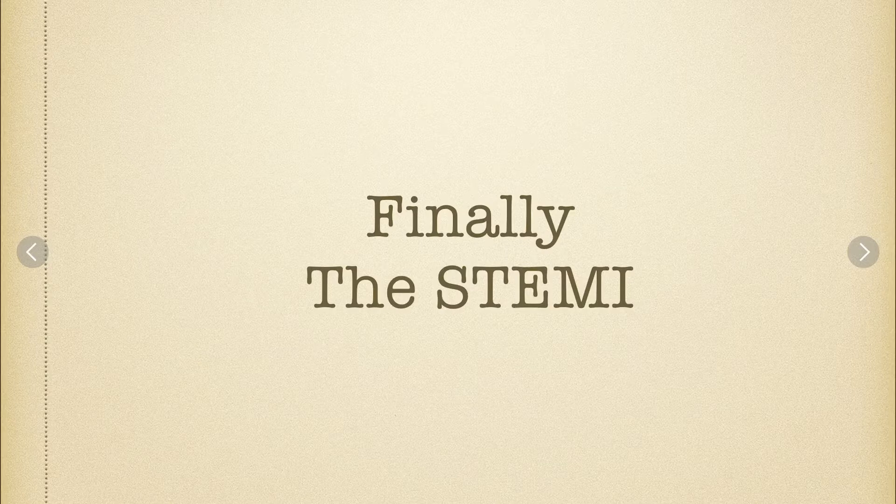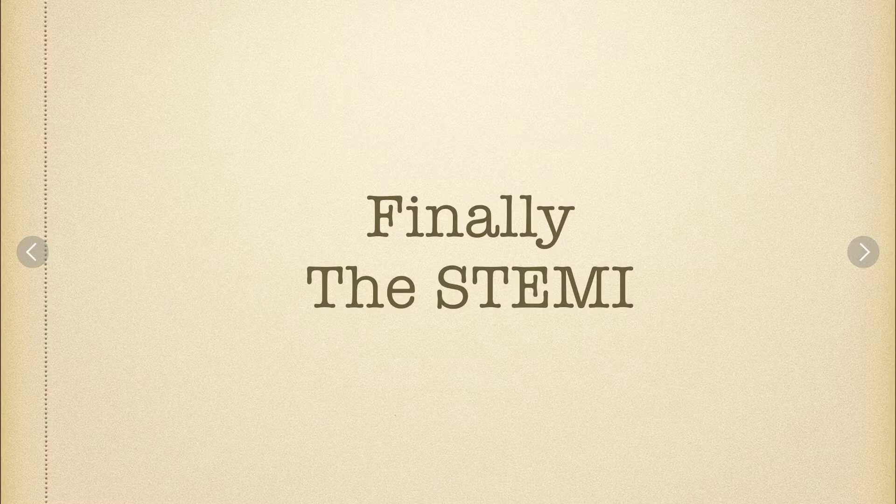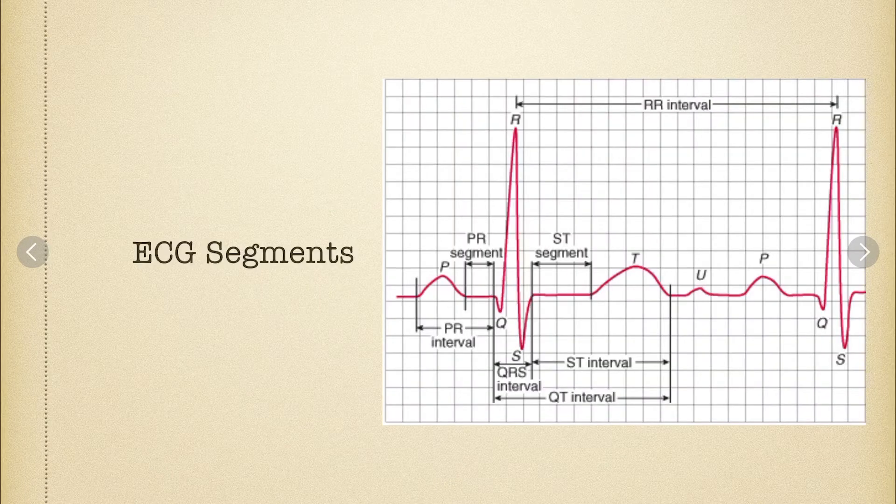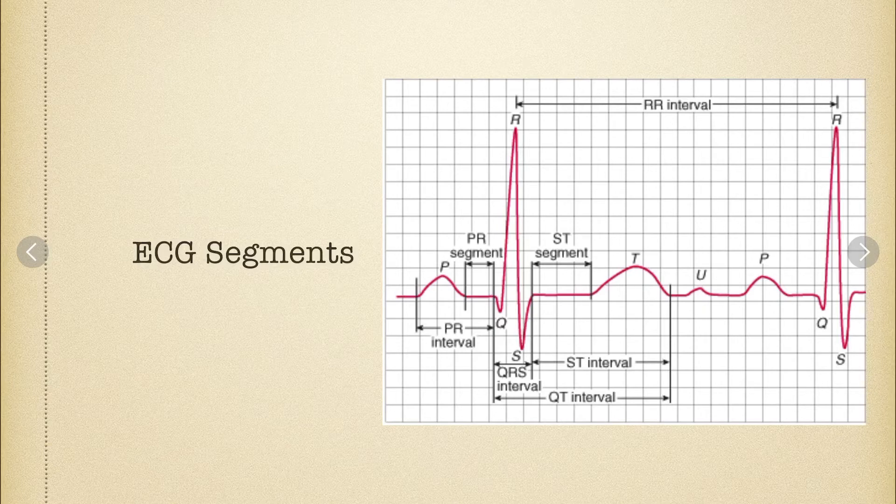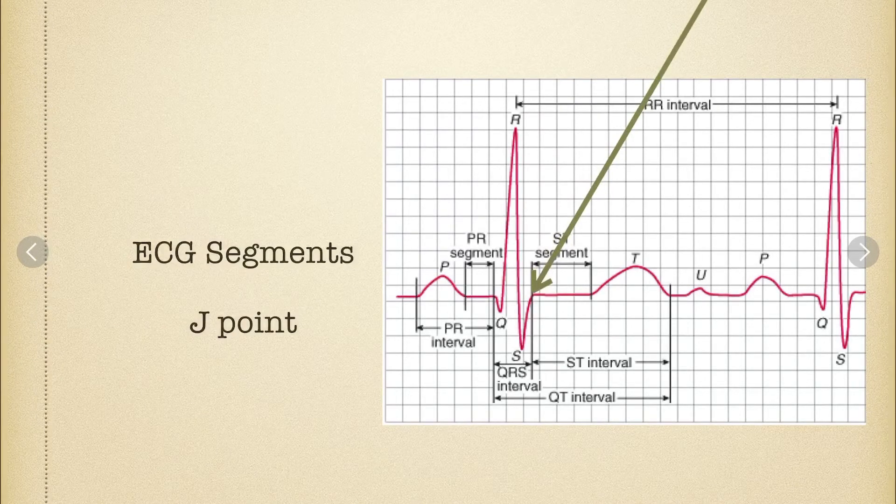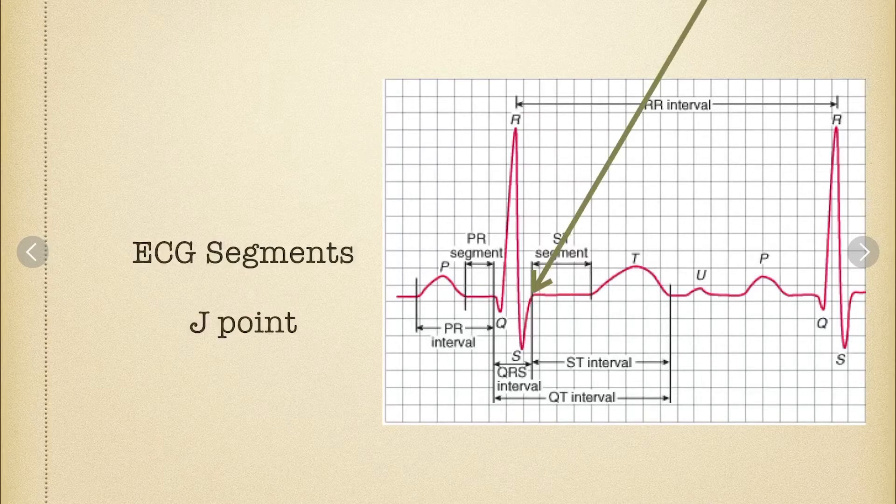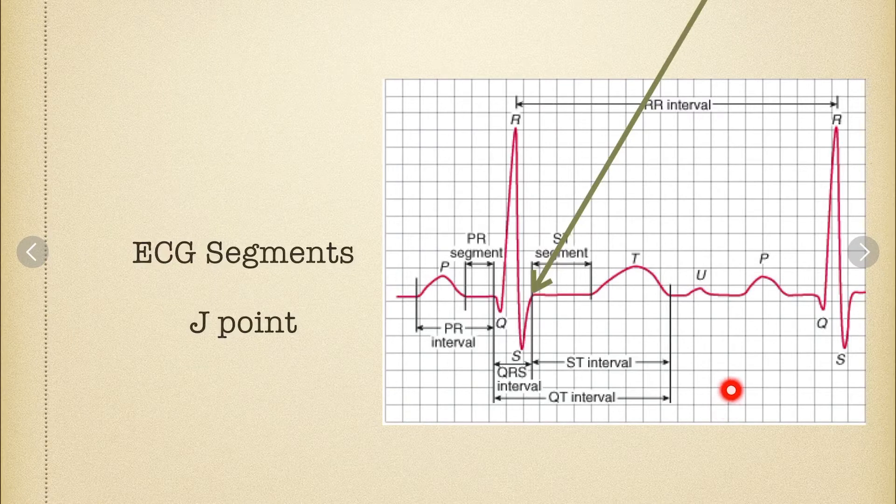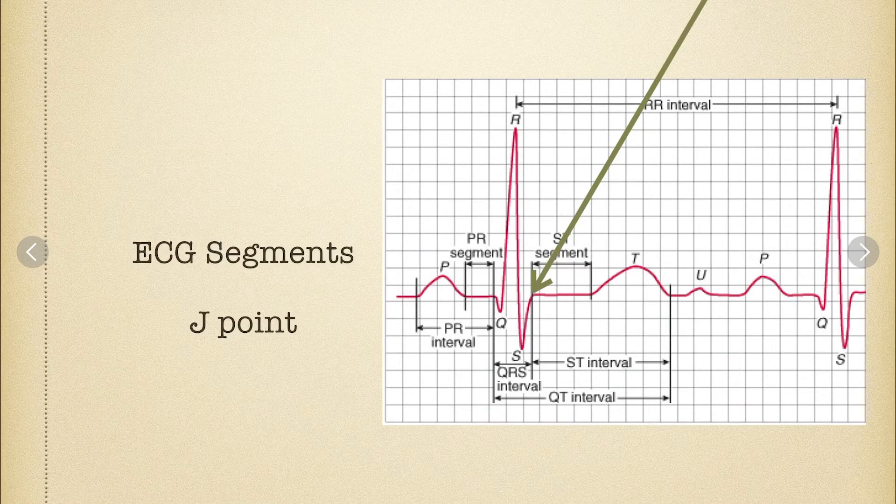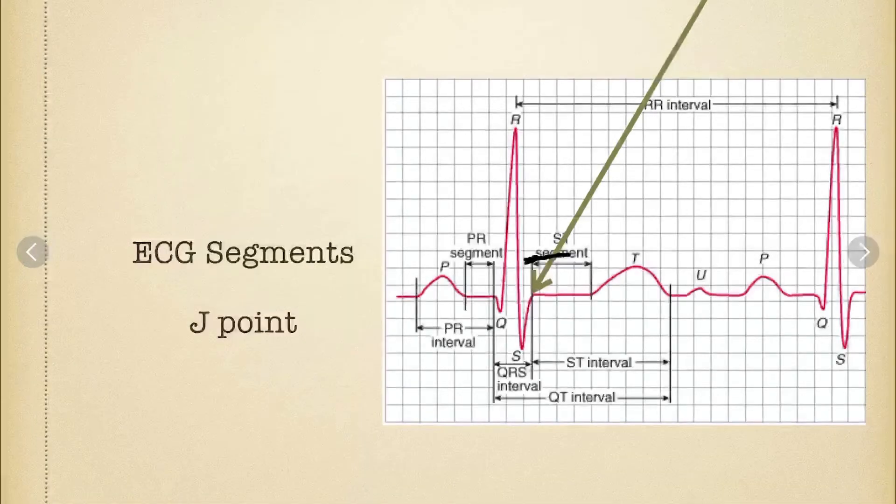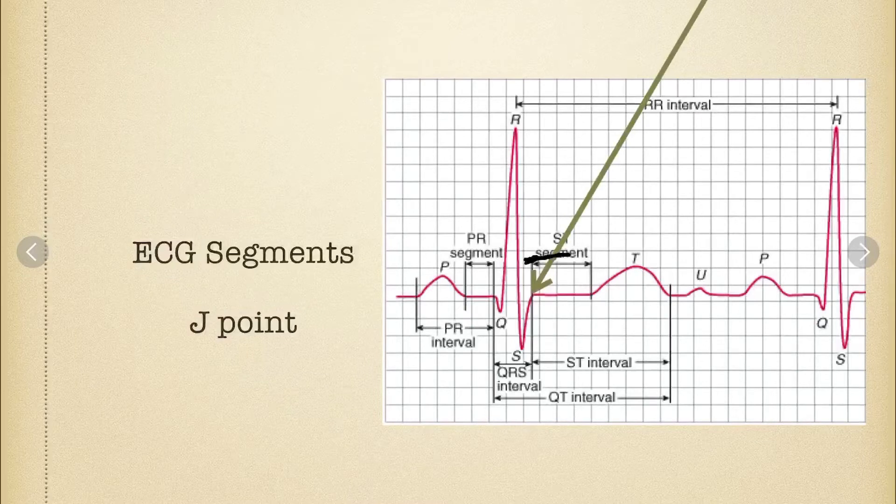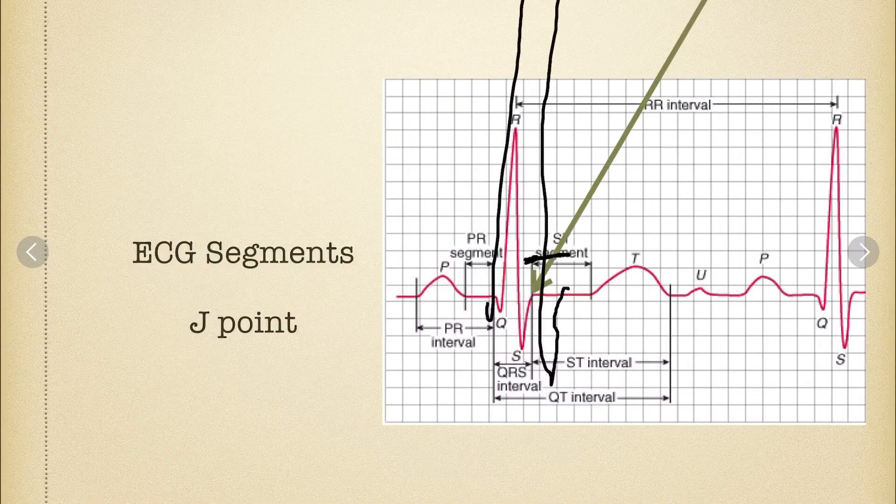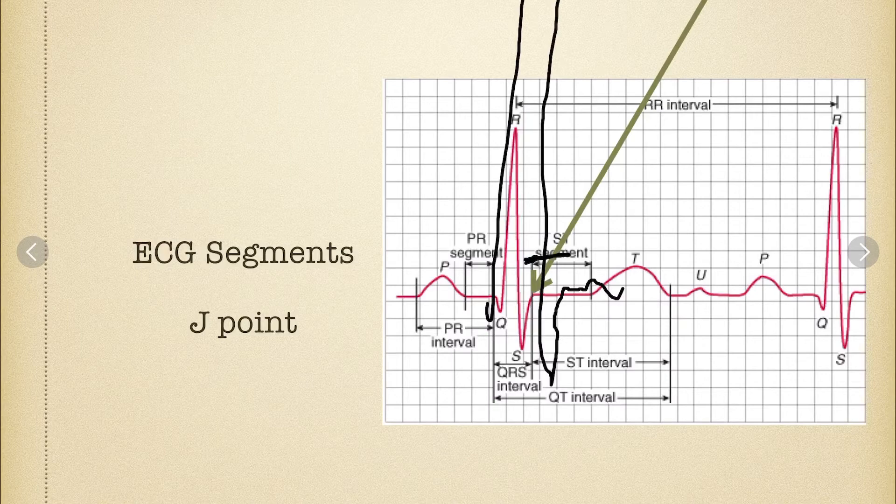So finally, the cool stuff, the STEMI, this is when we get to do the IV and the oxygen and the aspirin and the nitro and rapid transport to the cath lab and all the cool stuff. So what we are looking at, is our baseline and there's something called the J point, which is right about there. And this is where the S comes back to the baseline. And if it is above that, we call it elevated. Now for a male, we need to have at least one, two boxes. So this one for it to be ST elevation would have to be at least right up here. For females, they say one and a half boxes. I think that's really getting fine for us. Just realize that there are some differences in male and female ECGs.